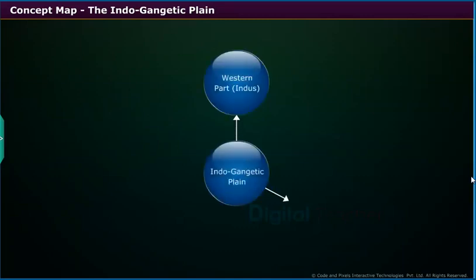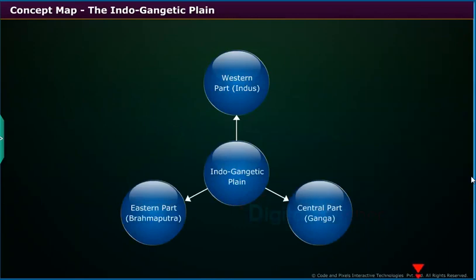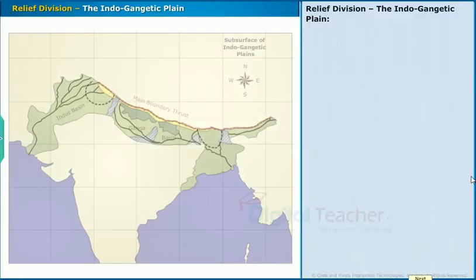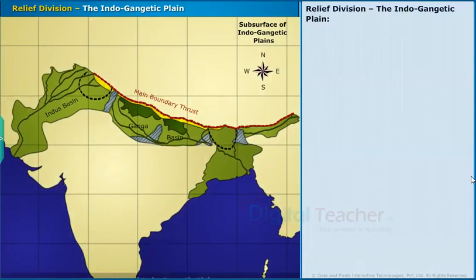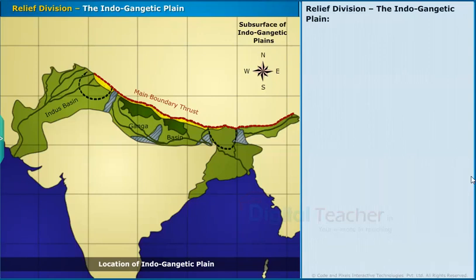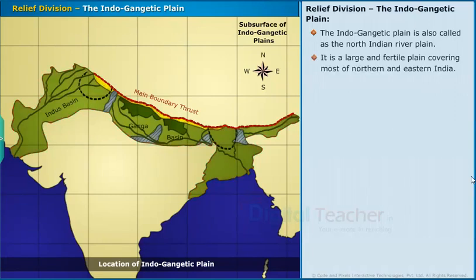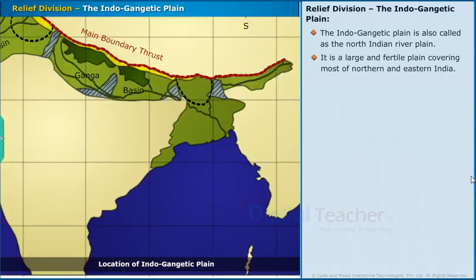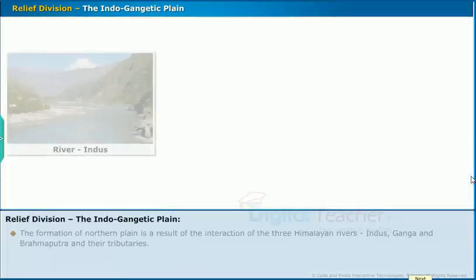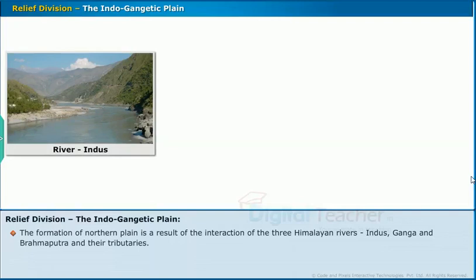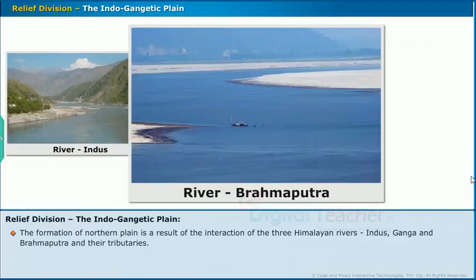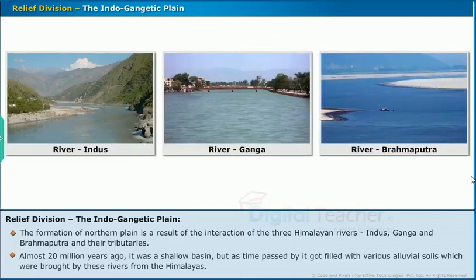Let us now look at the concept map of the Indo-Gangetic Plain and discuss this important relief feature. The Indo-Gangetic Plains is also called the North Indian River Plain. It is a large and fertile plain covering most of Northern and Eastern India. The formation of the Northern Plains is a result of the interaction of three Himalayan rivers — Indus, Ganga, and Brahmaputra — and their tributaries. Almost 20 million years ago it was a shallow basin, but as time passed, it got filled with various alluvial soils brought by these rivers from the Himalayas.